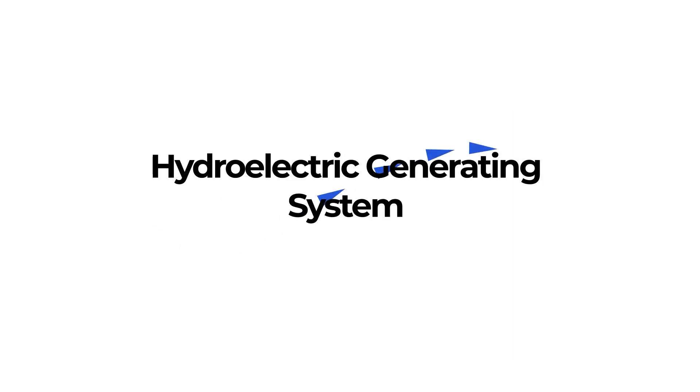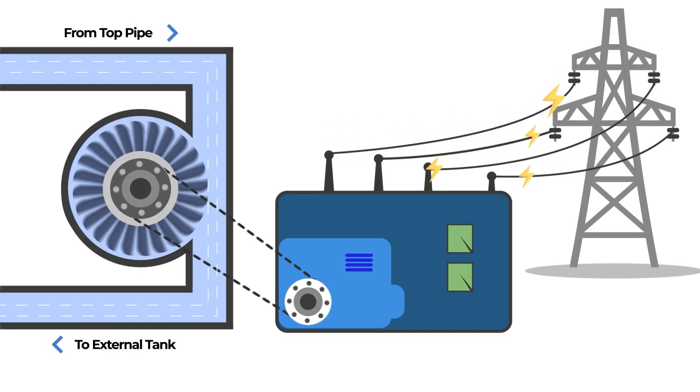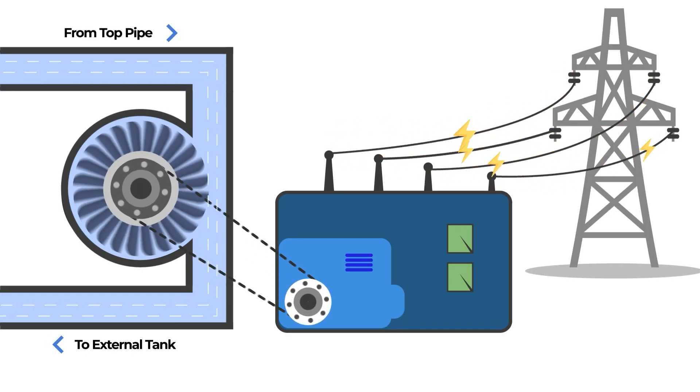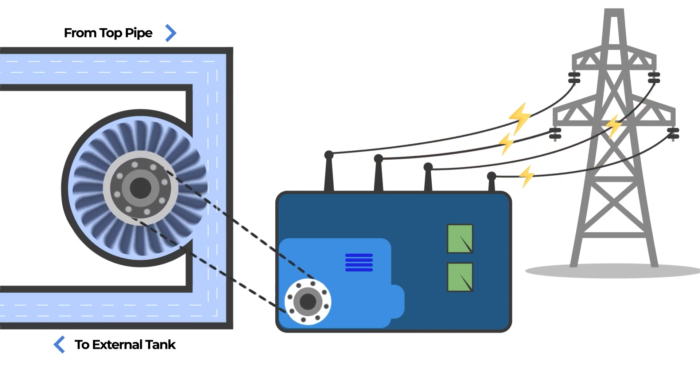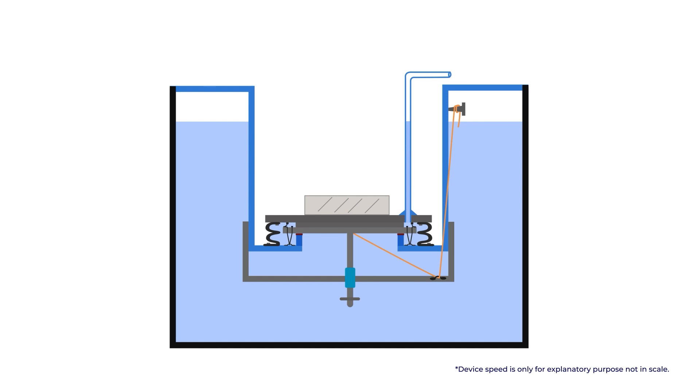Finally, the fifth system is hydroelectric generating system. The falling water is used to generate electricity by water turbine connected to generator, like this. Now let's see how the device will work efficiently.